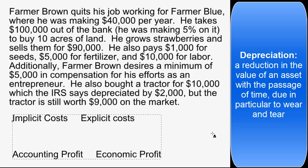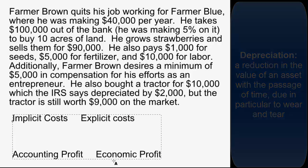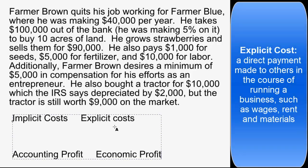The typical problem will ask you to identify which of these costs are implicit and which are explicit, and then calculate the accounting profit and the economic profit. An explicit cost is anything where Farmer Brown actually has to take money out of his pocket and hand it to another person. Just like an explicit film, you can see the money changing hands — you can see the money move from one place to another.